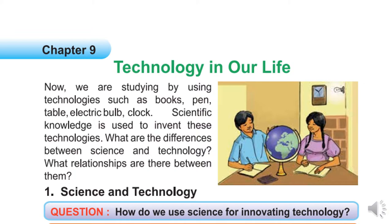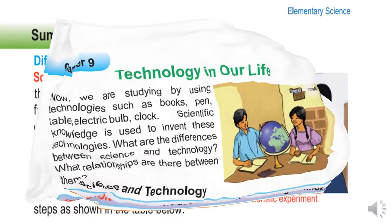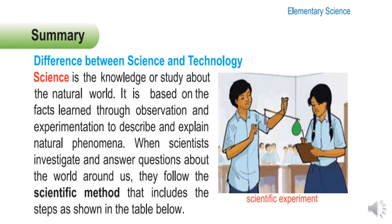What relationships are there between them? We use various technologies like books, pen, table, electric bulb, and clock for studying and writing. Scientific knowledge is used to invent these technologies. Now we will look at the difference between science and technology.